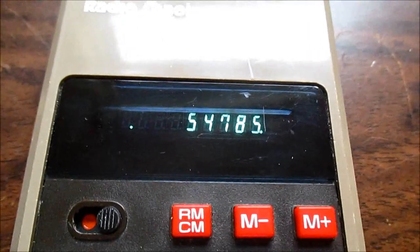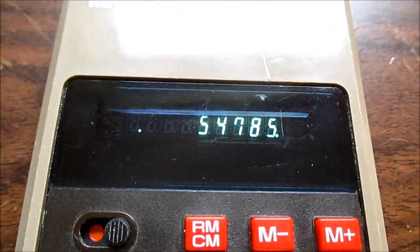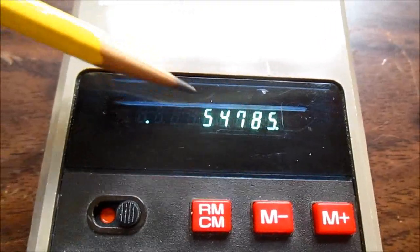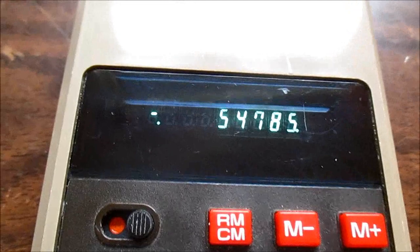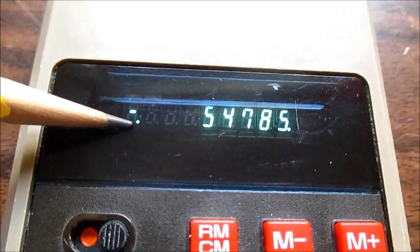And there's 7 segments plus a decimal place, and there's a total of 9 digits. The 9th one's used for like negative sign and the dot tells me there's memory.